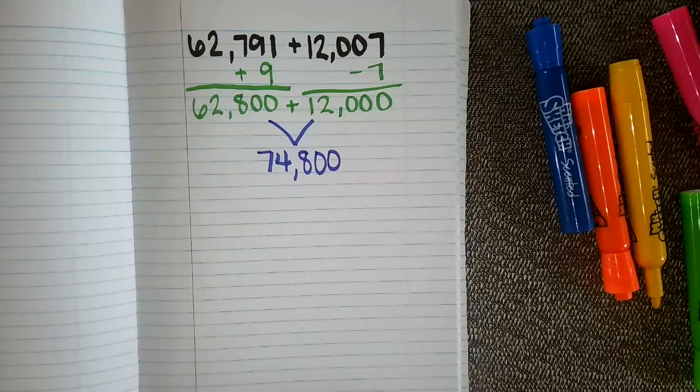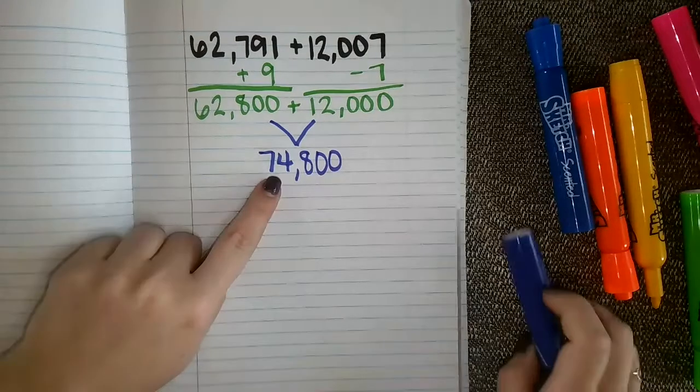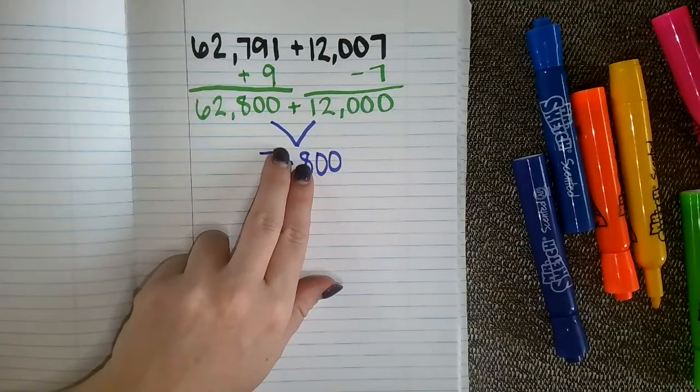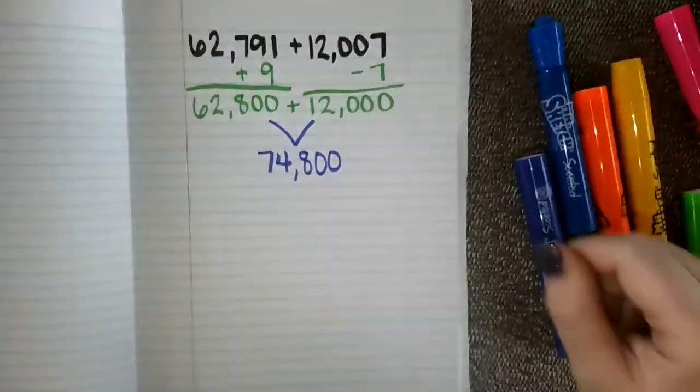However, it is important that whenever we have a final answer from adding our two friendly numbers together, that we go back and we kind of undo those changes that we made in the beginning.